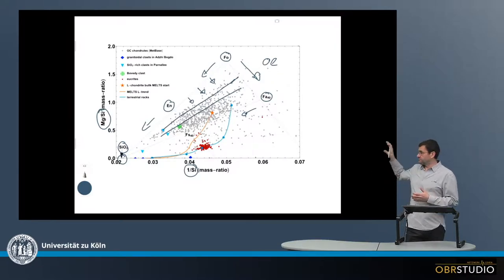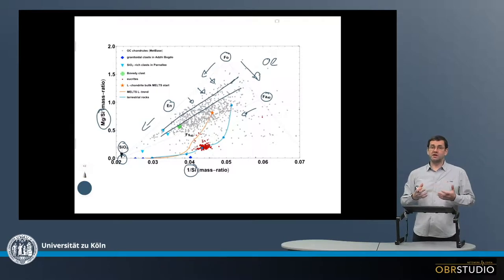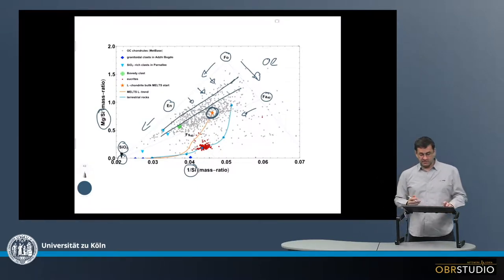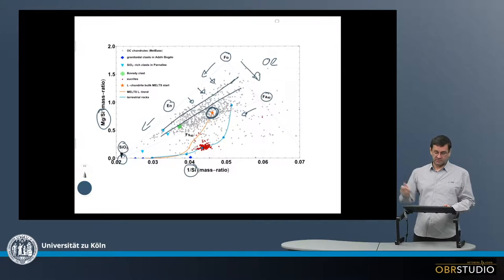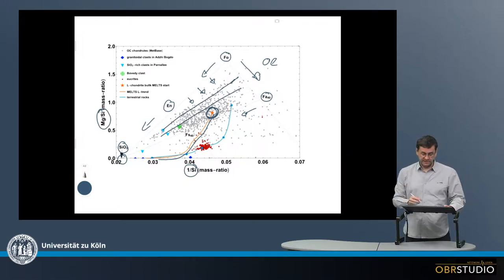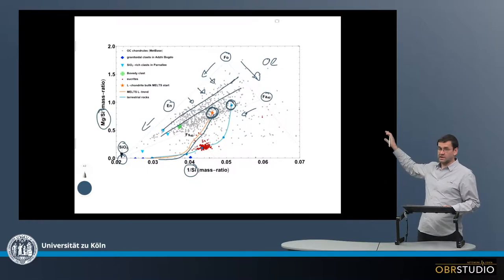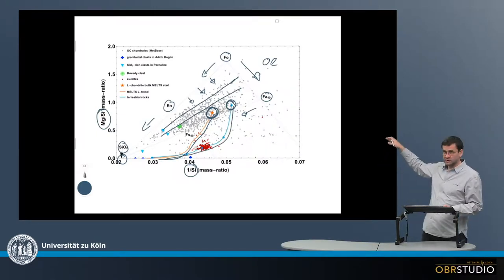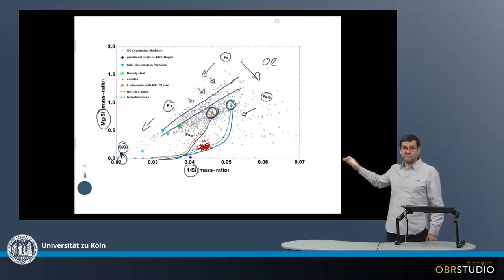Now to test this further, this plot also contains melt evolution trends. For example, this orange star in the middle is the bulk composition of an L chondrite, and then the MELTS program available online is used to calculate an evolution path for the melt that develops from this initial composition. This evolution path develops down here, and apparently the chondrules do not follow such a path. A second trend is added here, starting with some peridotitic material — these are terrestrial rocks — and these terrestrial rocks also develop similarly to the L chondrite melt. Again, the chondrules do not plot on such a trend.